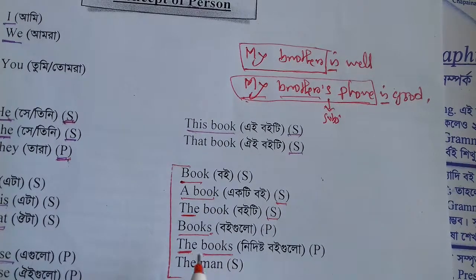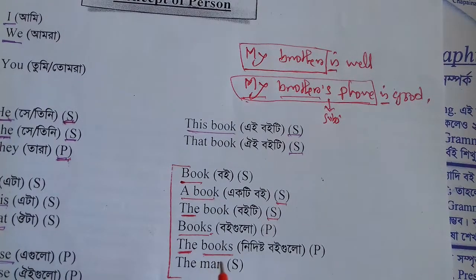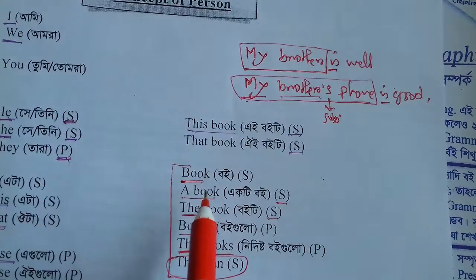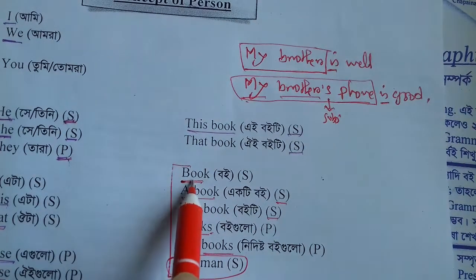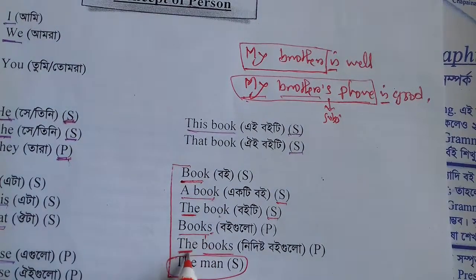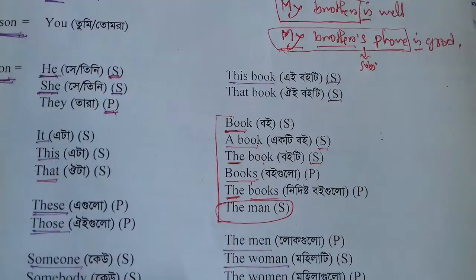When we use 'the,' that means it is definite and identified — that's why we use 'the.' A noun can be found in different ways. For example: 'mobile,' 'a mobile,' 'the mobile,' 'mobiles,' and 'the mobiles.'